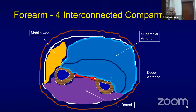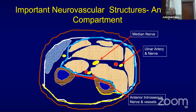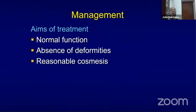In the forearm, you have the anterior flexor compartment, the mobile wad — containing brachioradialis, extensor carpi radialis longus and brevis — and the compartments are interconnected. For forearm compartment syndrome, you mainly decompress the anterior compartment, which also leads to the lateral mobile wad muscles. You very rarely need to do something to the dorsal compartment. Associated nerves include the median nerve, ulnar nerve, anterior interosseous nerve, and the radial superficial branch.